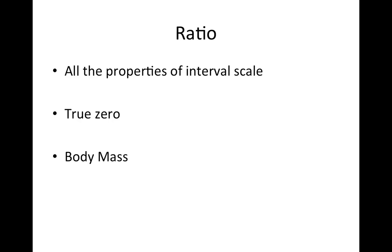This is where ratio comes in as probably the most complete scale of measurement. It has all the properties of interval scale, but it also has a true zero. An example of this would be body mass, because a value of zero represents an absence of mass. If a value of zero represents an absence of a particular quality, then you can say that this is ratio scale.